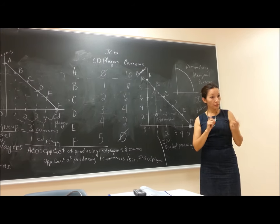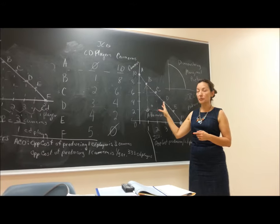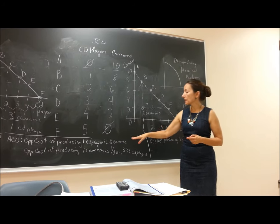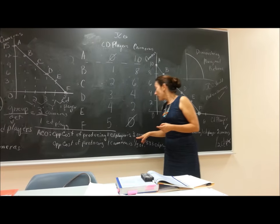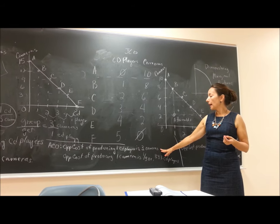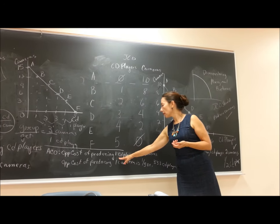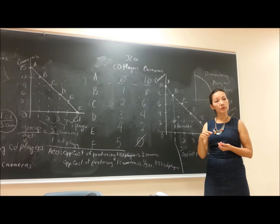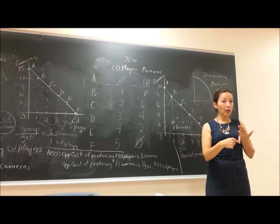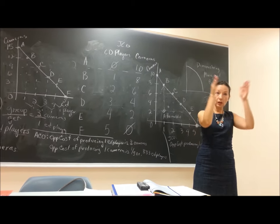Where do they decide to produce on that production possibilities curve? It's going to be based on marginal benefit and marginal cost. If it costs ACO three cameras to produce one CD player, and cameras sell for $100 each, then that $300 opportunity cost is weighed against the benefit of producing a CD player. Opportunity cost includes everything — just like coming to class costs your tuition plus the other things you could be doing.